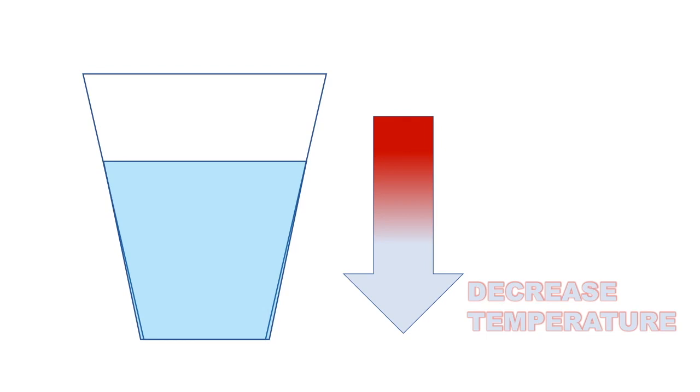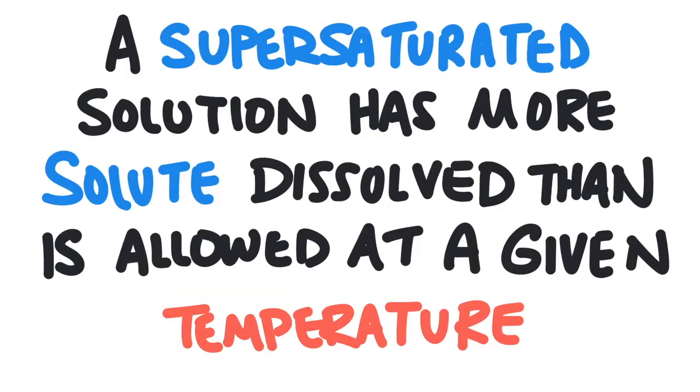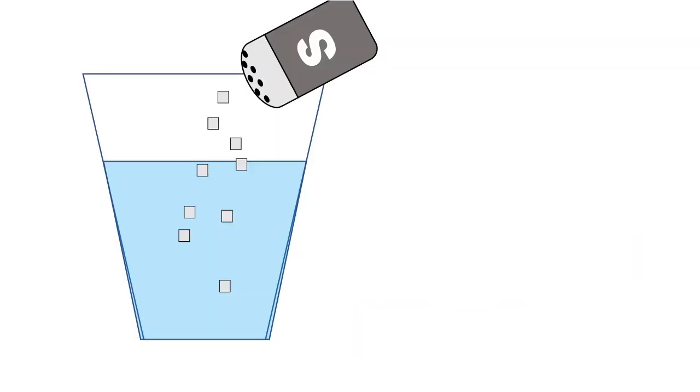Now what's really cool about this is that if you carefully cool the solution back to room temperature, the solute may remain dissolved in the solution, even though that's way more solute than should be dissolved at that allowed temperature. This is called a supersaturated solution. It's a solution that has way more solute than should be allowed for a given temperature.